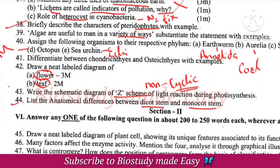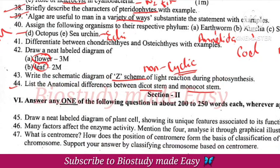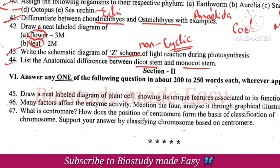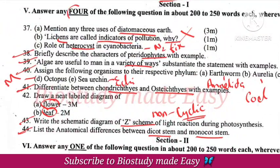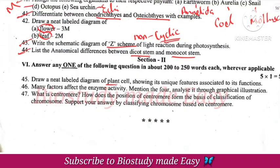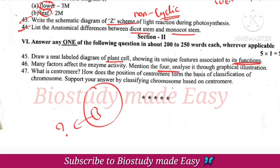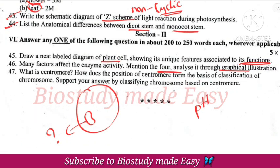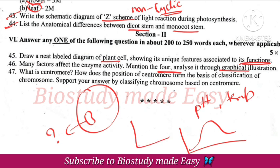Cover the pteridophytes — economic importance is very very important. The difference between dicot and monocot stem. Substrate concentration — increasing substrate concentration affects enzyme activity. Types of chromosomes based on the position of centromere.